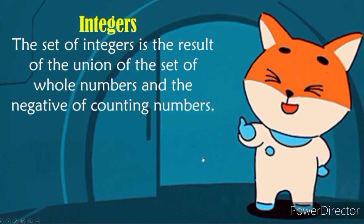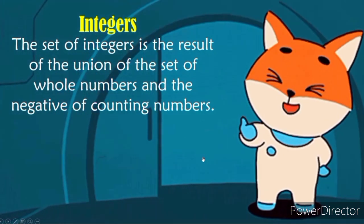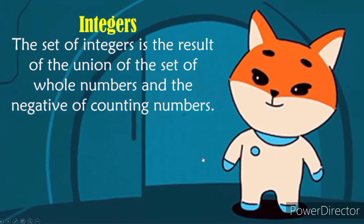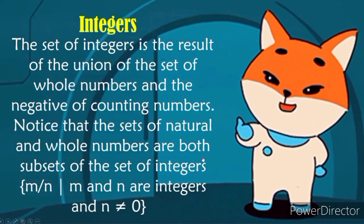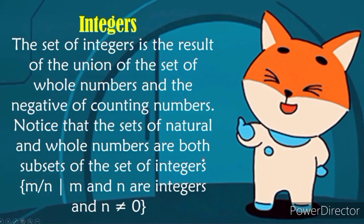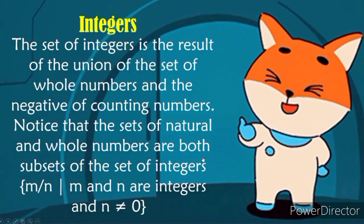Notice that the set of natural and whole numbers is the result of the union of the set of whole numbers. Notice that the set of natural and whole numbers are both subset of integers. Notice that the set of natural and whole numbers are both subset of set of integers M over N or M and N are integers and N is not equal to 0.